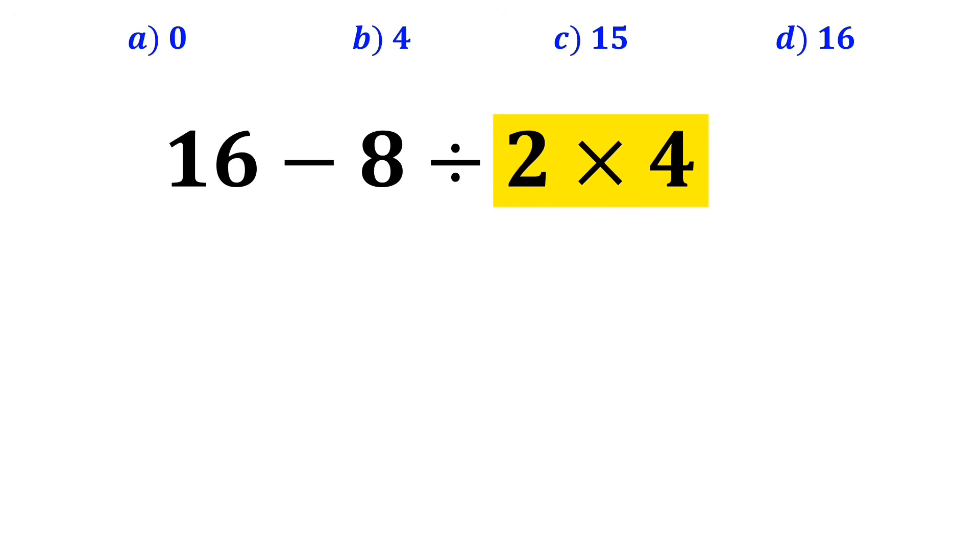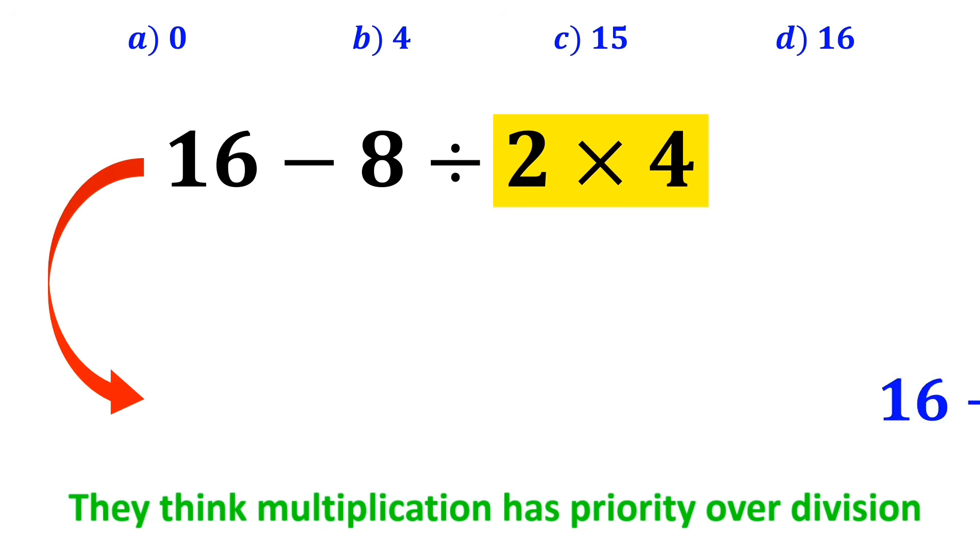In the next step, they usually go for the multiplication between 2 and 4, because they think multiplication has priority over division, so they rewrite this expression as 16 minus 8 divided by 8.